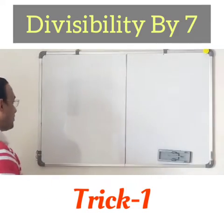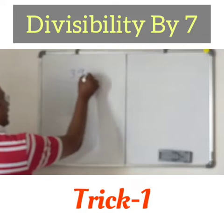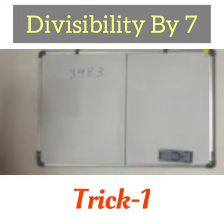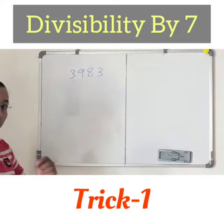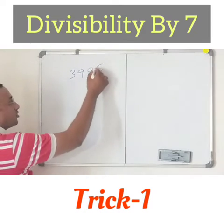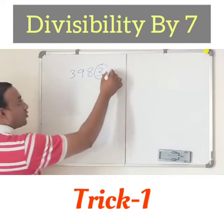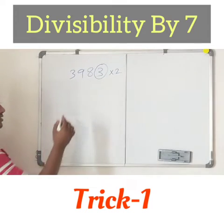So let us take an example: 3983. We are going to check whether it is divisible by 7 or not using trick 1. So what I am going to do? Take the last digit — 3 — multiply with 2. What do you get friends? 6.